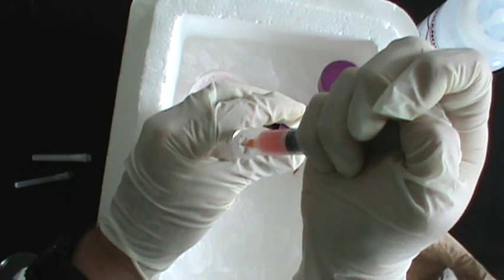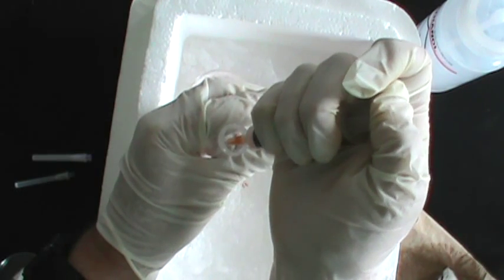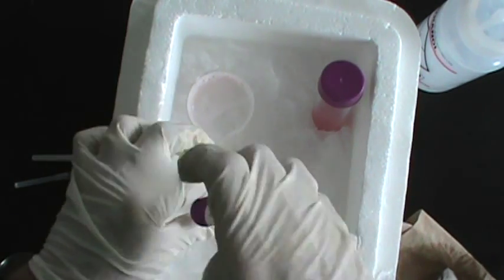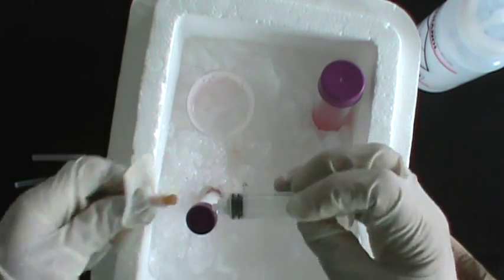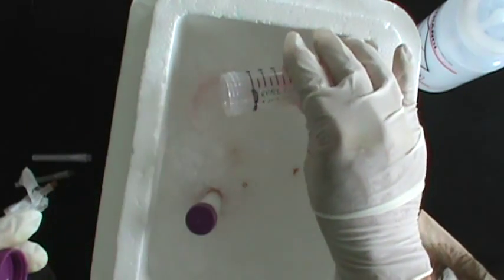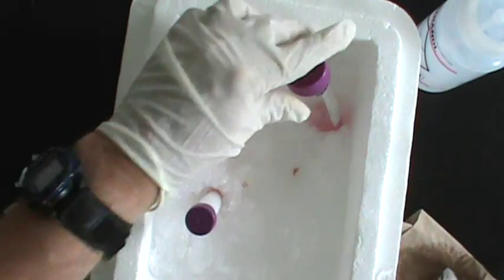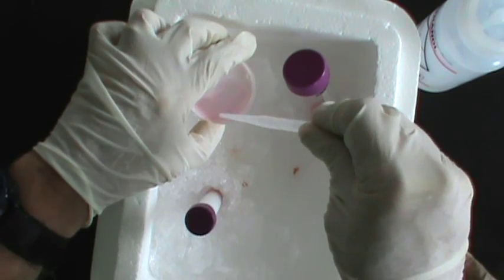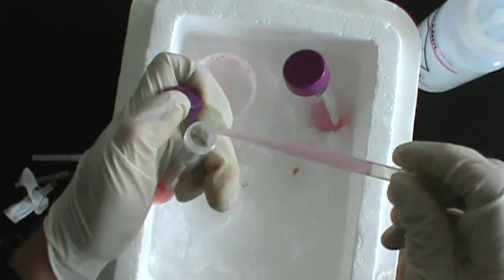Now we may still have quite a few cells remaining in the dish, so to make sure we don't leave those cells behind, put a small volume of culture medium into the dish and transfer it into the 15 mil tube as well.